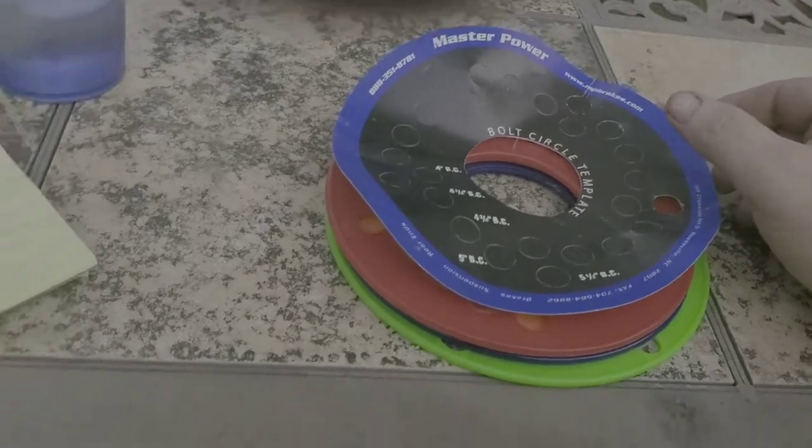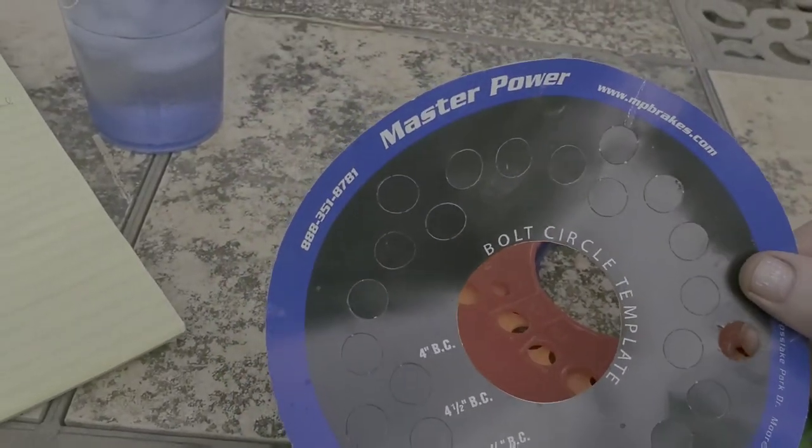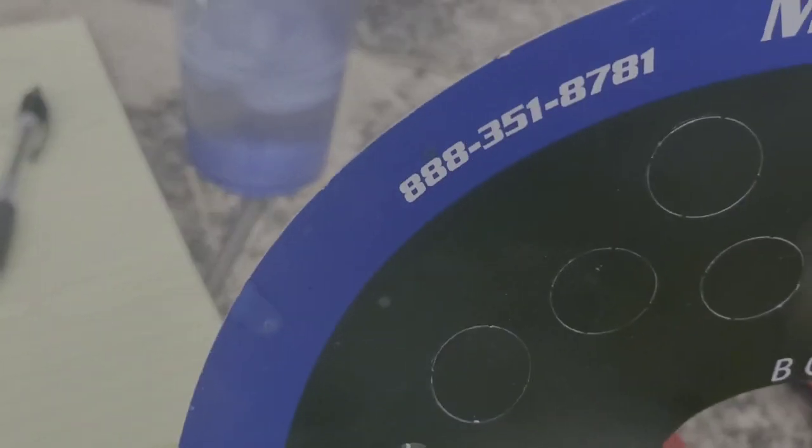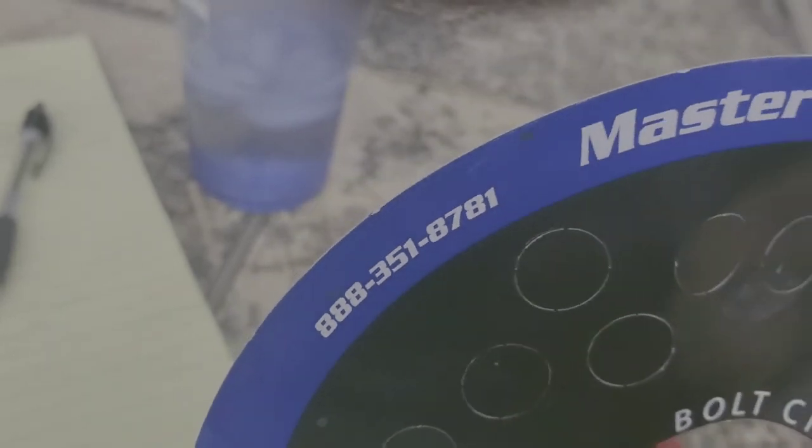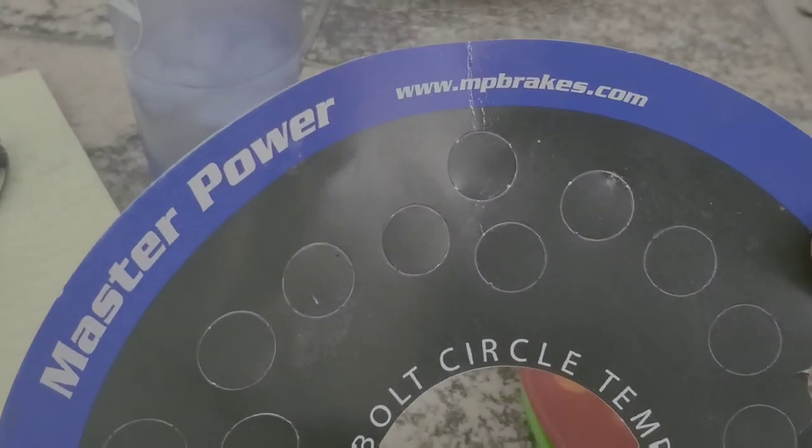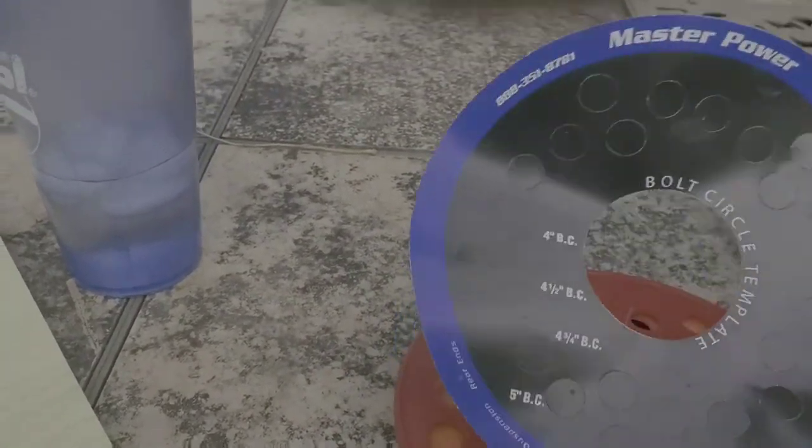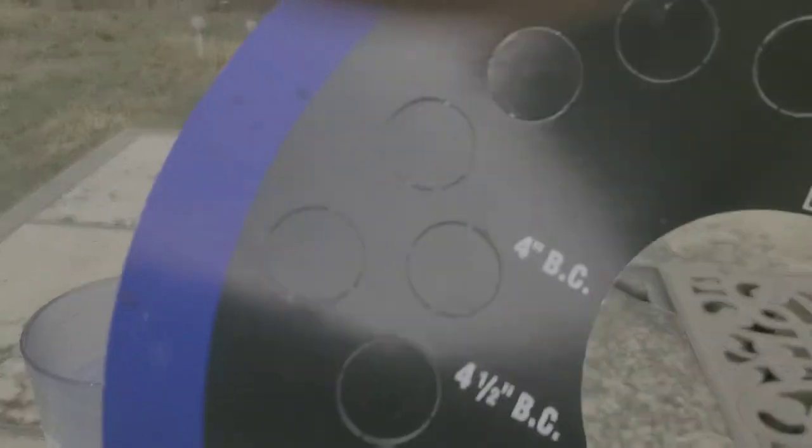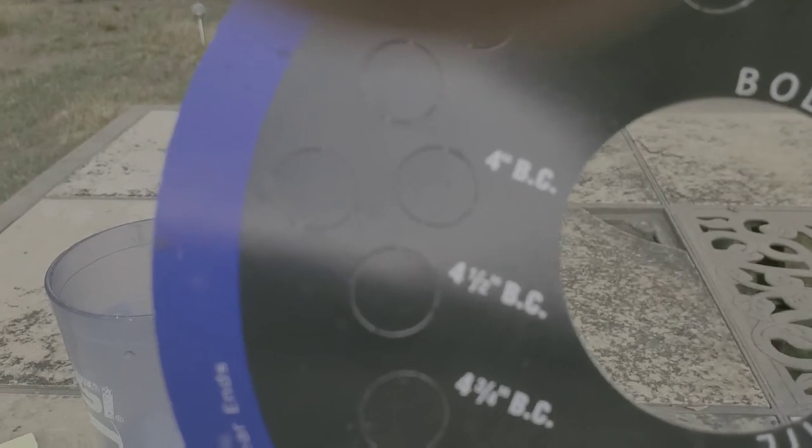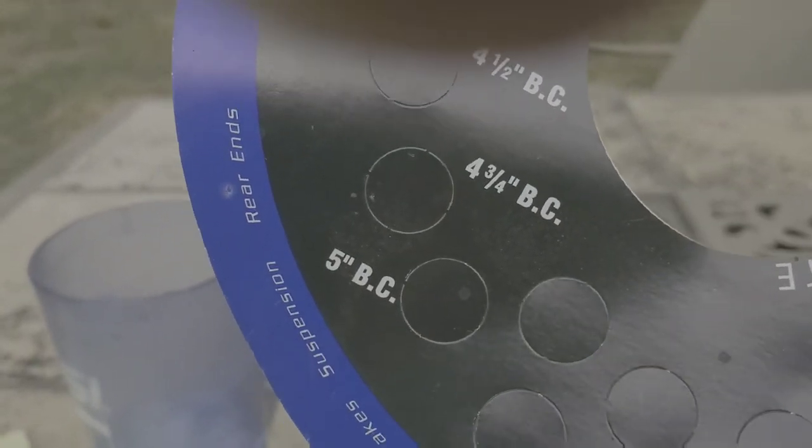The first thing we want to look at is what we call a bolt circle template. I've got one right here. As you can see, this is from Master Power. There's a number right there, 888-351-8781. I probably picked this one up at a car show. It's just a little paper template with holes in it. As you can see, it's got the four inch bolt pattern, bolt circle pattern indicated on it, the four and a half, and the four and three quarters.